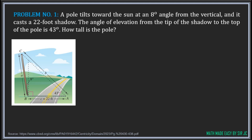The angle of elevation from the tip of the shadow to the top of the pole is 43 degrees. The angle of elevation is the angle formed by the line of sight and the horizontal line, so its measure is 43 degrees. The side 'a' is opposite the 43-degree angle, and we have 22 feet given, so we can use the Law of Sines to find the value of 'a', which is the height of the pole — as long as we can find angle C.